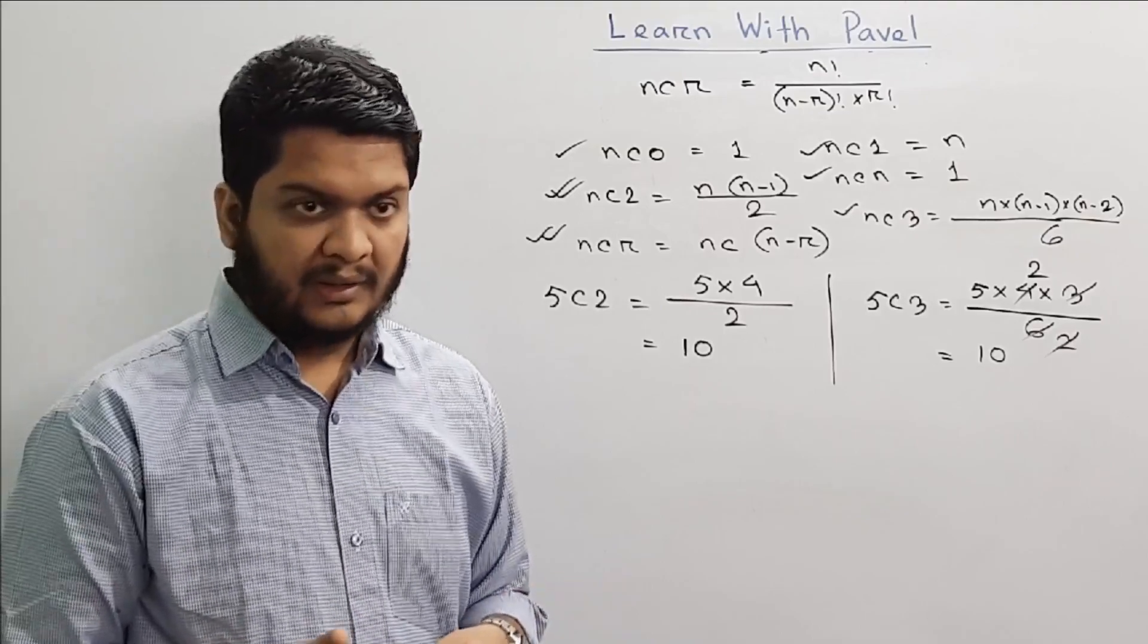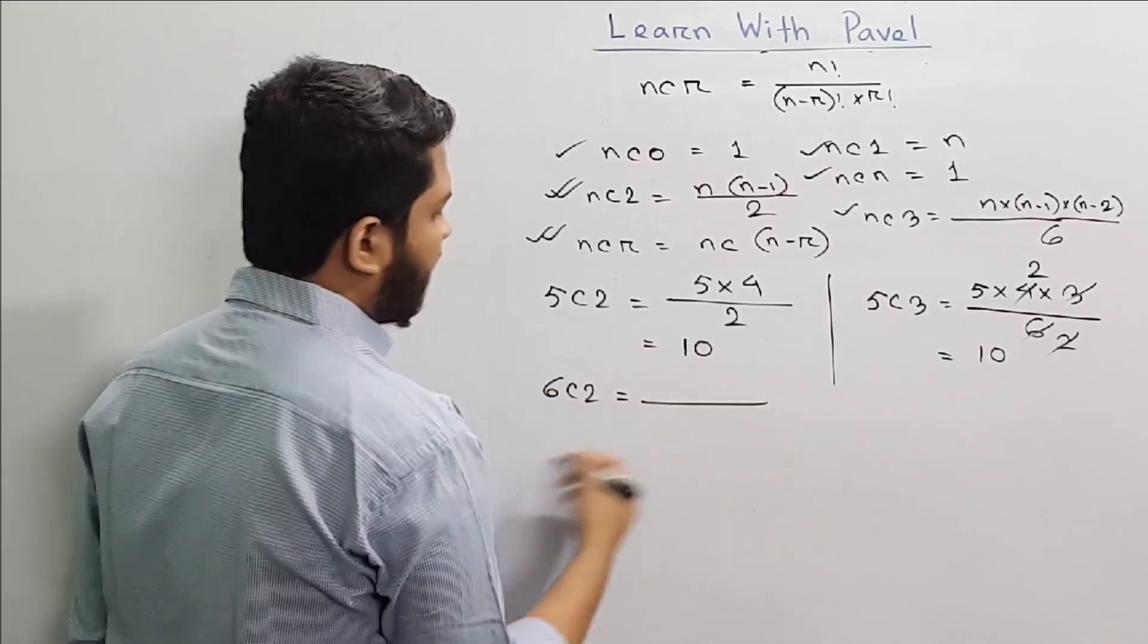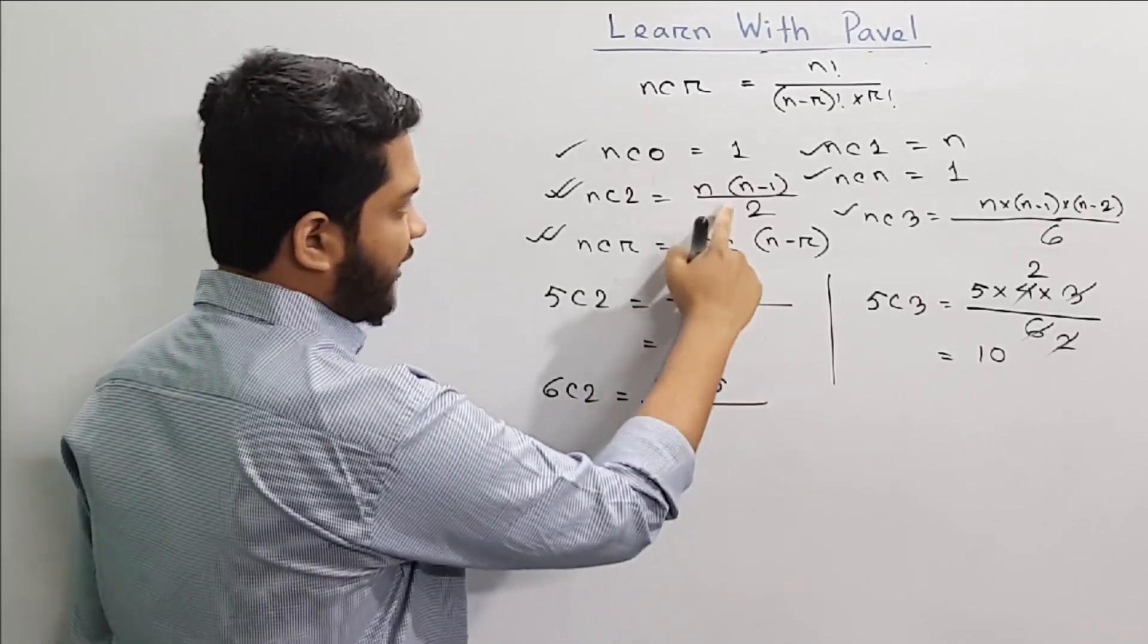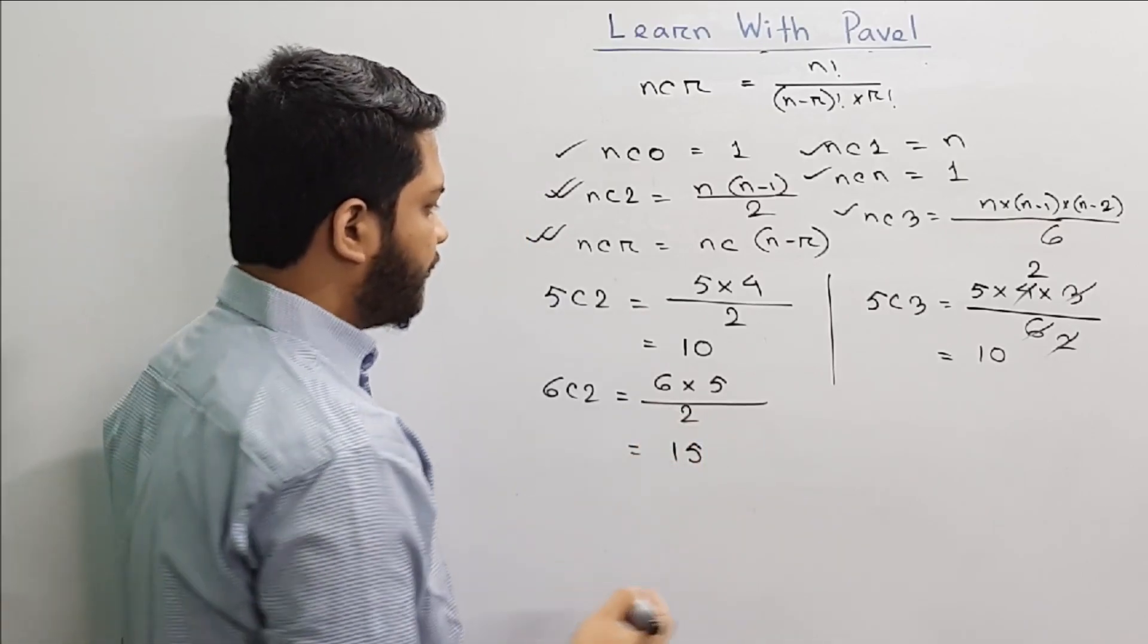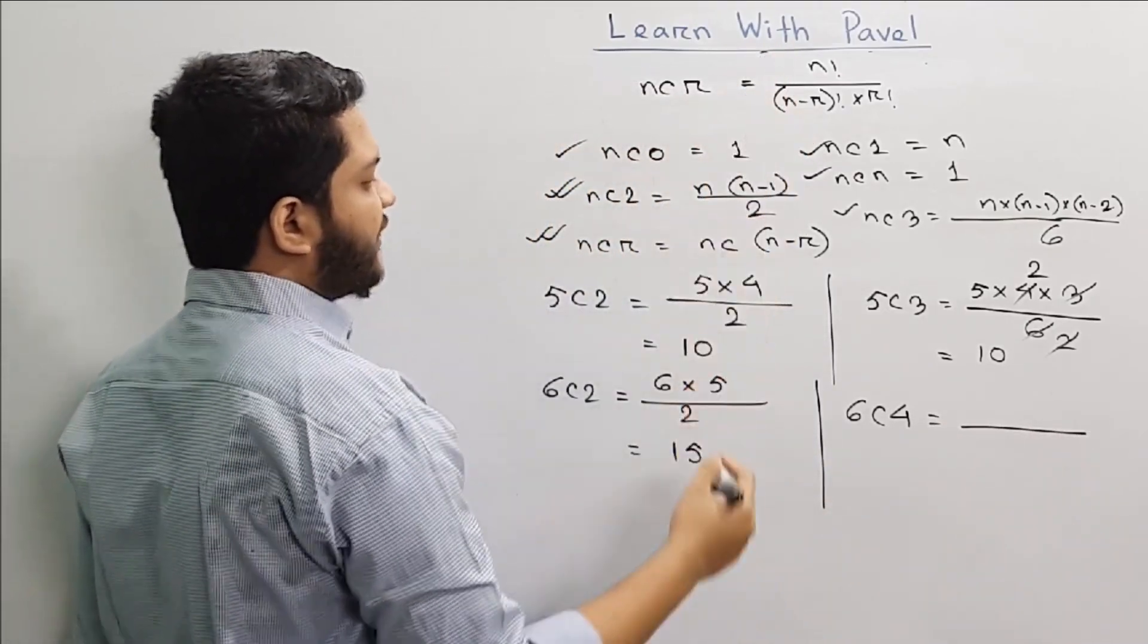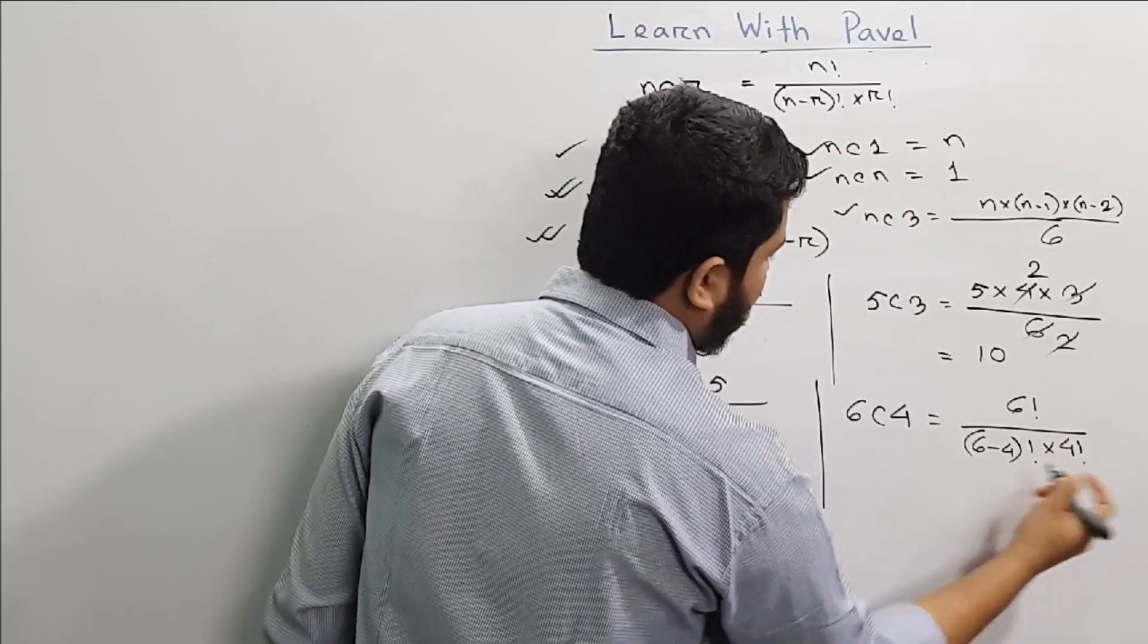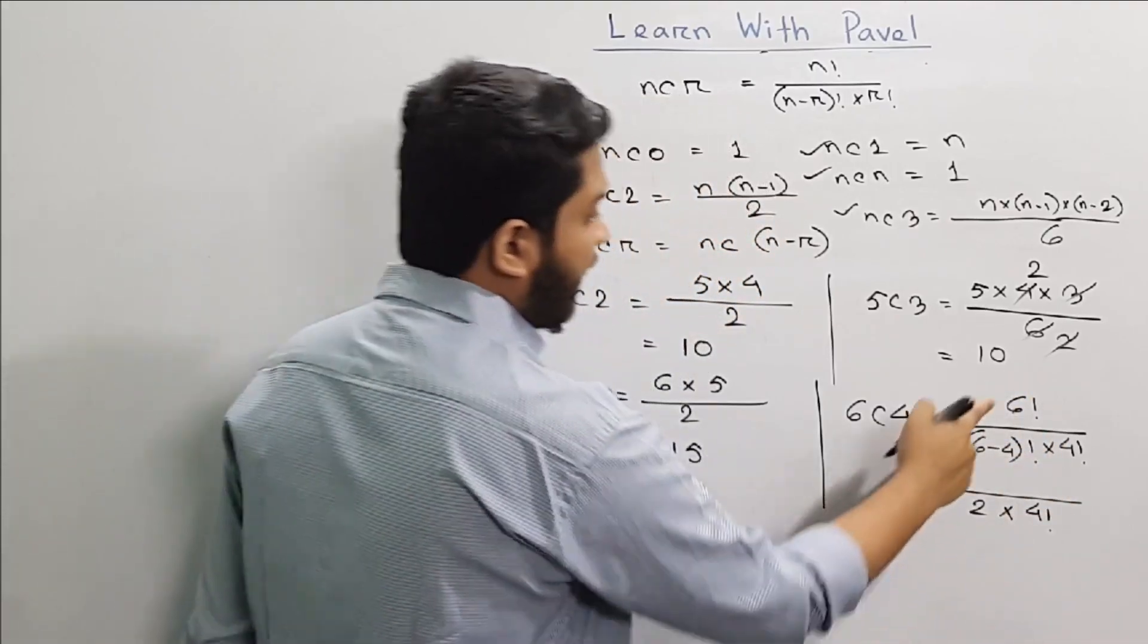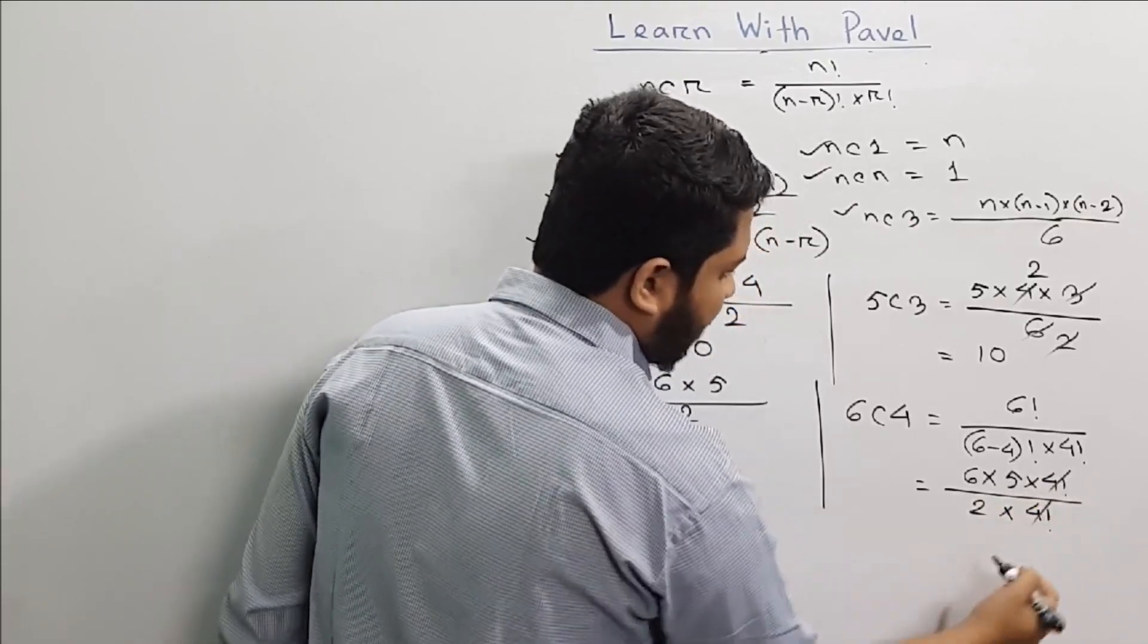Let's take a look at this one. We have 6C1, 6C4, 6C2. Like 4C4 cancel out. So we have 3.